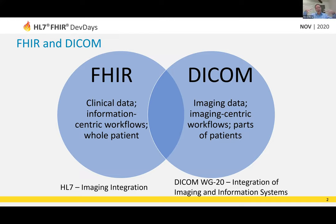There are two major working groups making sure that FHIR and DICOM play well together. The first is HL7, which has a group called Imaging Integration — an opportunity to understand what's happening in these collaborative worlds. On the DICOM side, there's DICOM Working Group 20, called the Integration of Imaging and Information Systems, working from the other side. Those two groups collaborate to create inside FHIR representations of DICOM metadata.